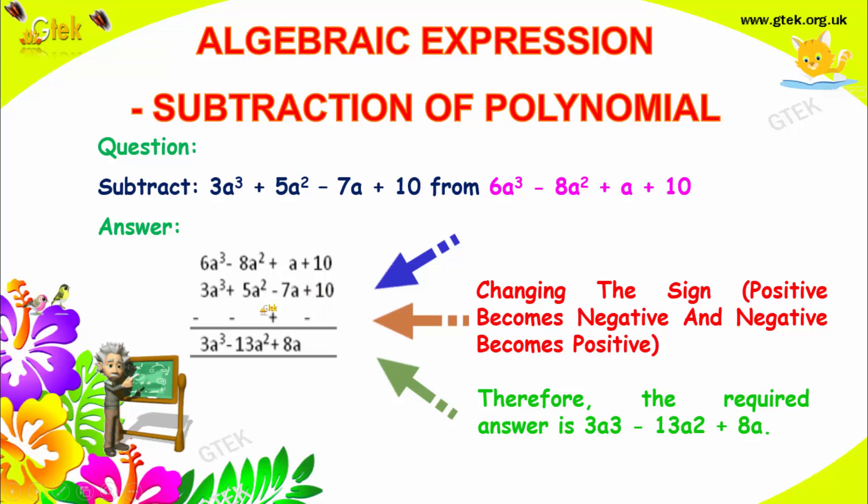Now, you got 6 minus 3, it is 3a cube. Minus and minus here, so minus 8a square minus 5a square, it will become minus 13a square. Plus a and plus 7a, it will become plus 8a. Plus 10, minus 10, it will become 0. So you got the answer as 3a cube minus 13a square plus 8a.